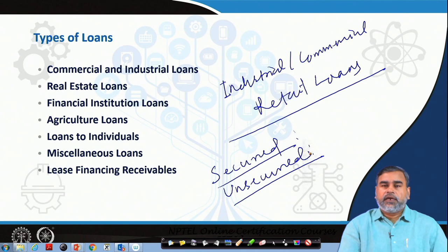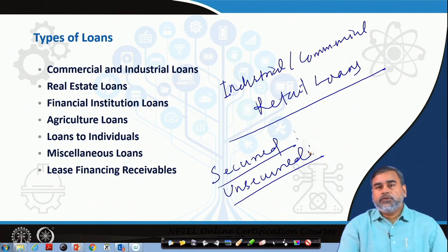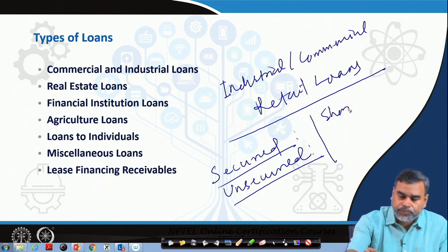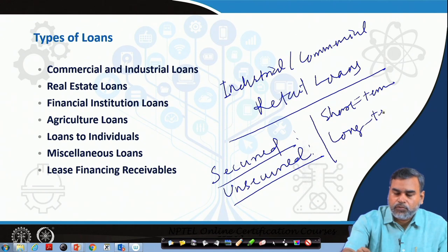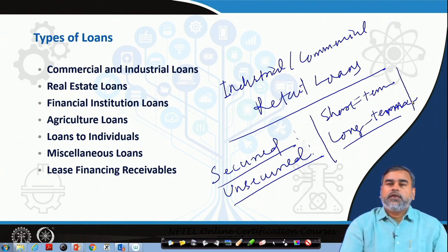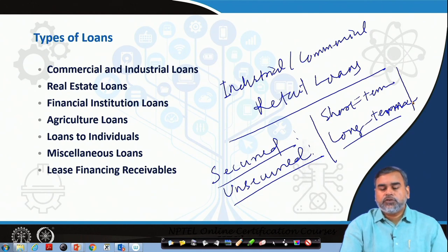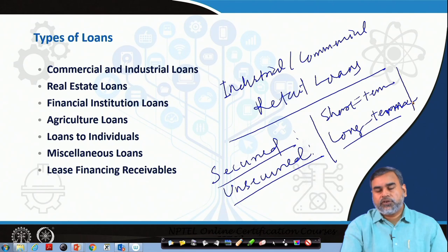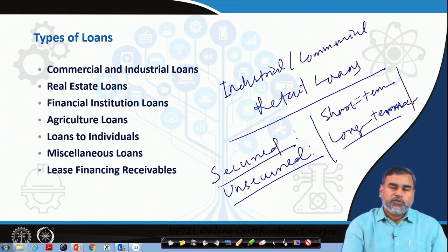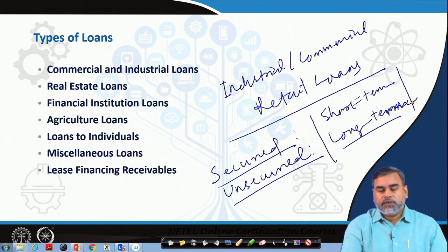Secured loans are backed by collaterals and unsecured loans are not. This is the way different types of loans are provided to different customers based on different objectives. Some people also define loans on the basis of term to maturity — short-term loans and long-term loans (or term loans). Short-term loans have a very short maturity period, generally up to one year, and in some cases up to three years. Long-term or term loans have a maturity period of more than three years — it can be 10 years, 15 years, 20 years.